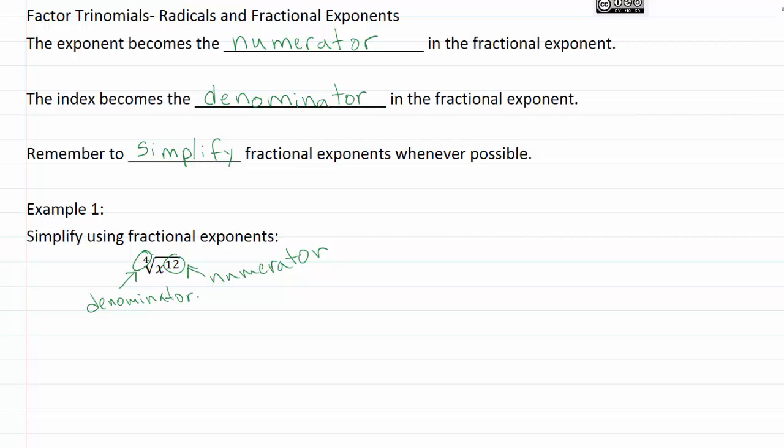So when I rewrite this as a fraction, I'll still have the x on bottom and then I'll have a fractional exponent where the number on top will be twelve and the number on bottom, the denominator, will be four.